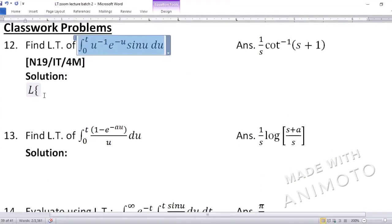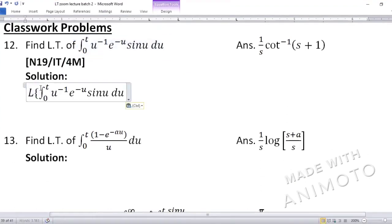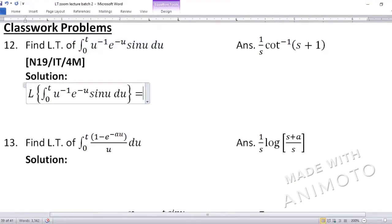Here is Laplace of integral. So first, integral will be 1 upon s. And inside the function, I will write t inverse e raised to minus t and sine u we should write as sine t. So we have learned last time that integral becomes 1 upon s, and the functions inside are written in terms of t.